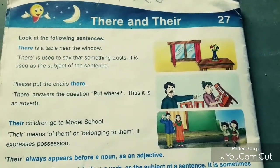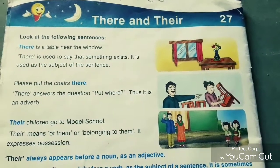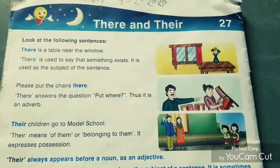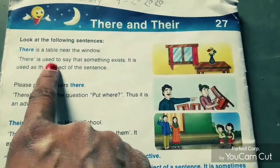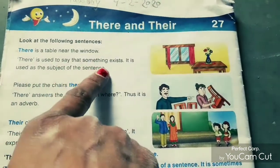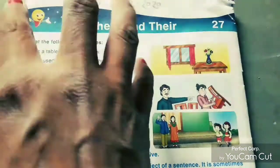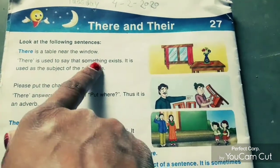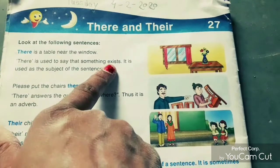Look at the first sentence: 'There is a table near the window.' Window ke paas kya hai? There is a table — window ke paas table hai. So 'there' is used to say something exists. It is used as a subject of the sentence. T-H-E-R-E — 'there' ka istamal hum log jo chijay hain unki place batane ke liye karte hain, to denote the place of existing things.